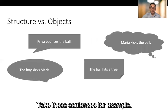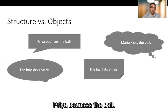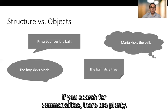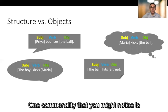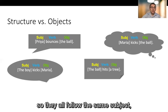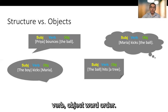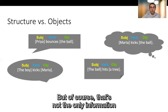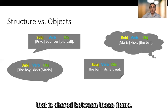Take these sentences for example, Priya bounces the ball, Maria kicks the ball, the boy kicks Maria, the ball hits a tree. In all these sentences if you search for commonalities there are plenty. One commonality that you might notice is that they all have similar structure so they all follow the same subject, verb, object word order but of course that's not the only information that is shared between these items.